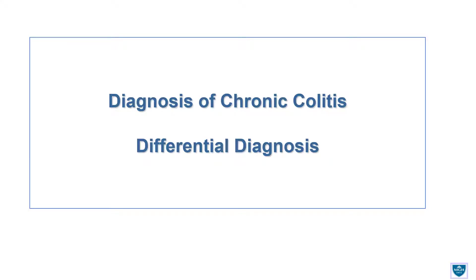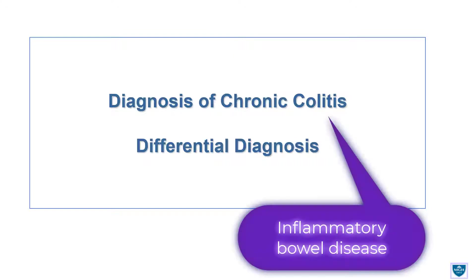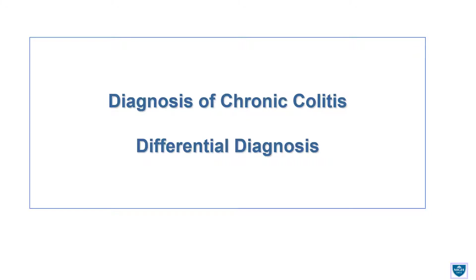Here's a relatively short talk on how one makes a diagnosis of chronic colitis. At least in this country, when you make a diagnosis of chronic colitis, it's inflammatory bowel disease. That said, there is a differential diagnosis, and we'll talk about that.